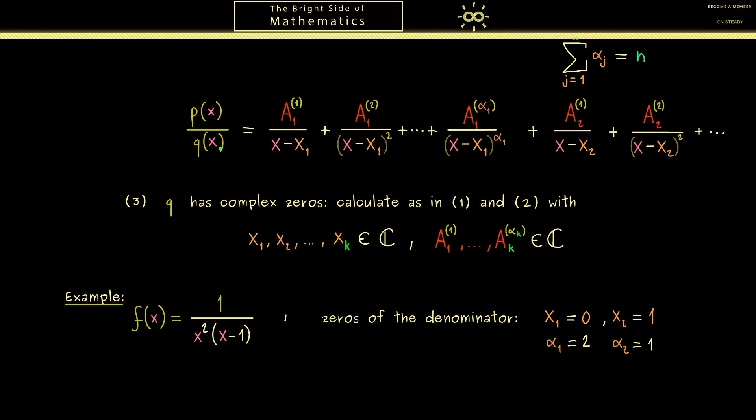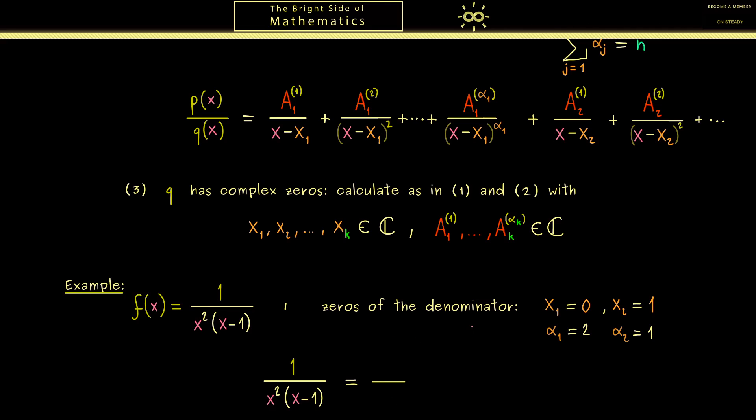So by using our formula from above we see we get exactly three terms. The denominator of the first one will be simply x - x₁, which means we can just write x. In the same way the second one will be x².